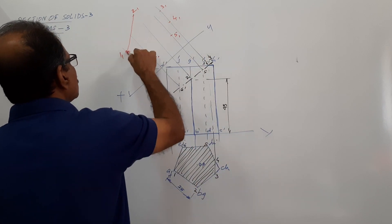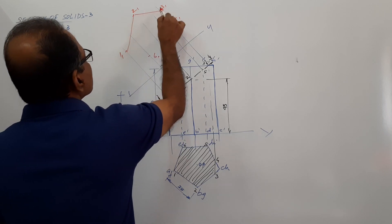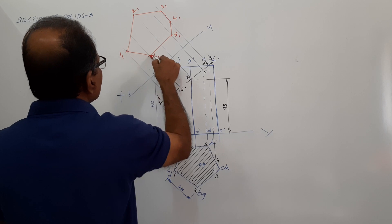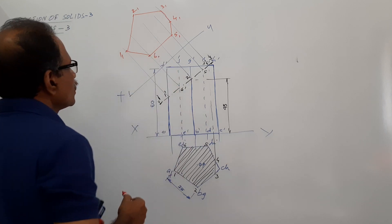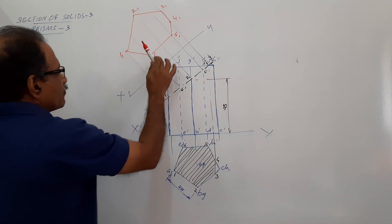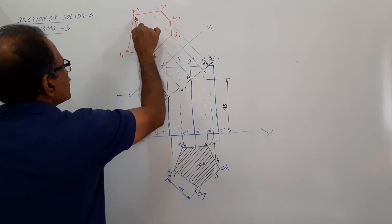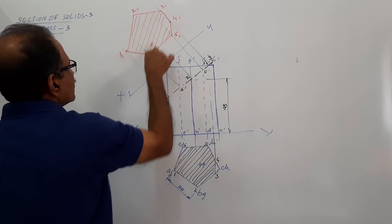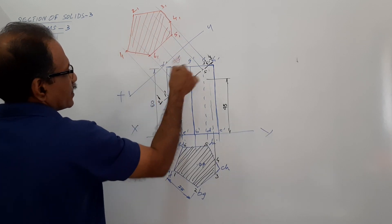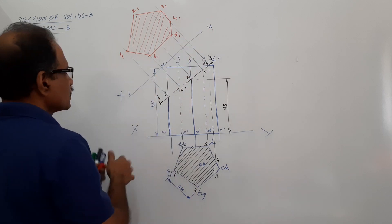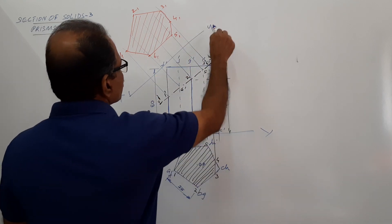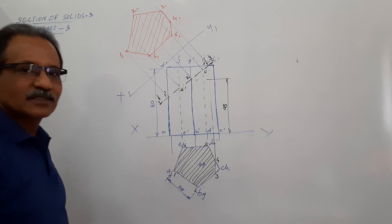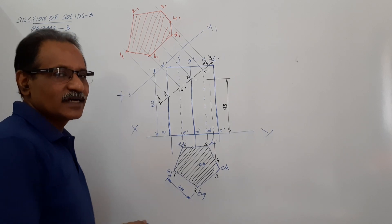Connect: 1,1 to 2,1 to 3,1 to 4,1 to 5,1 to 6,1 and back to 1,1. Hatch this at 45 degrees to the X1Y1. That completes the true shape.